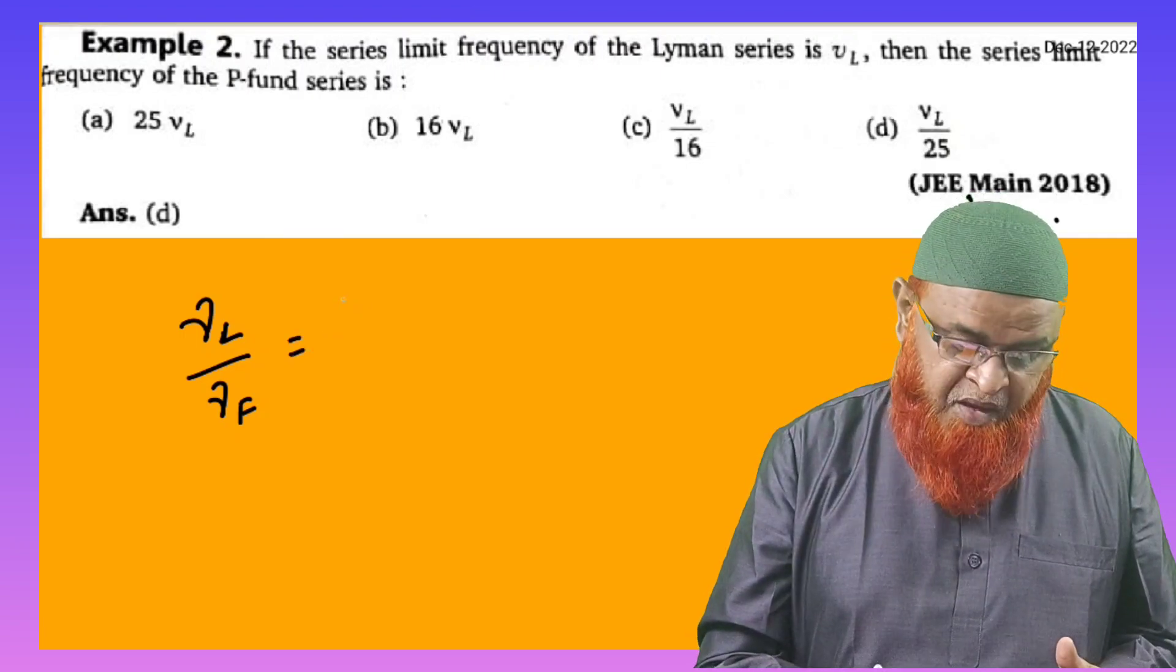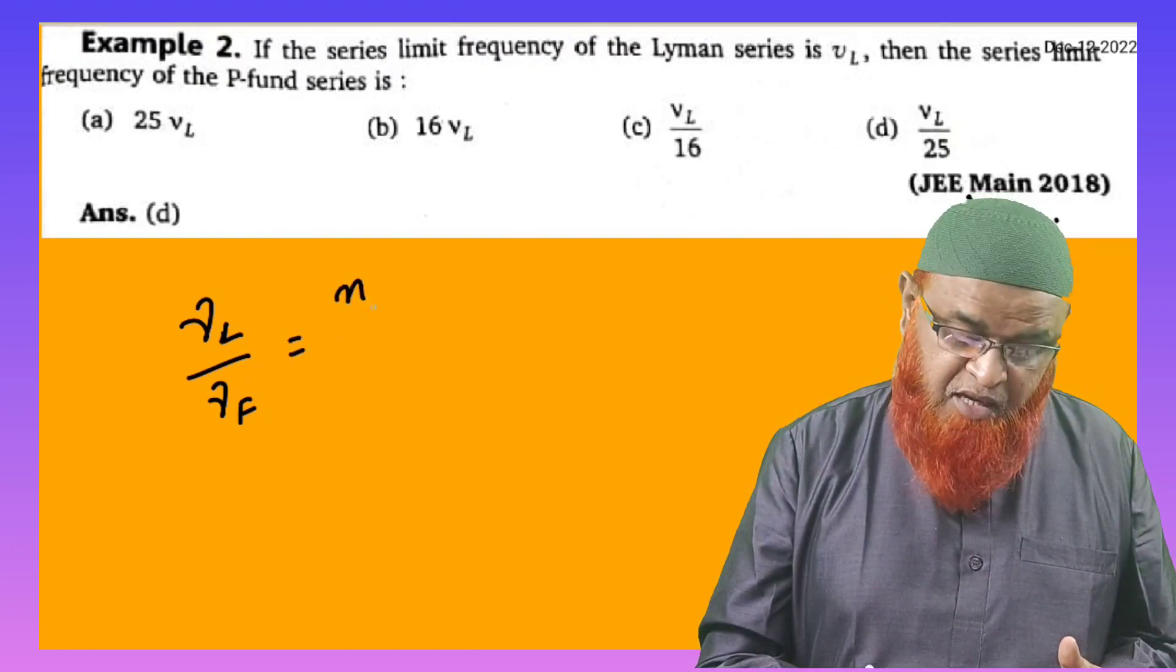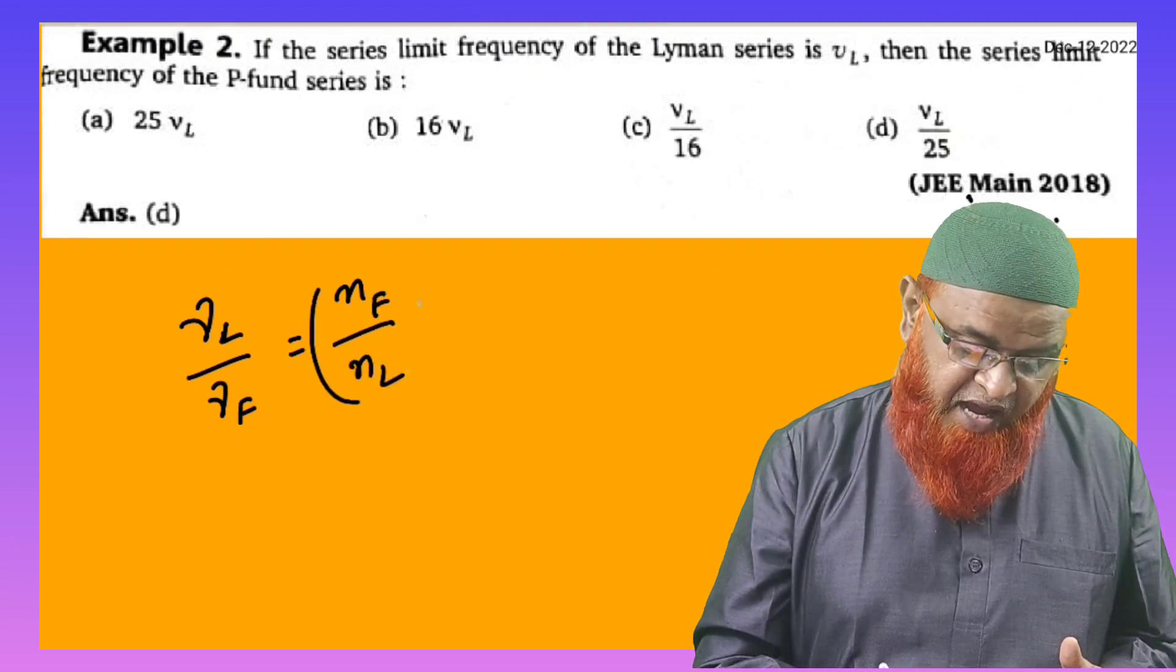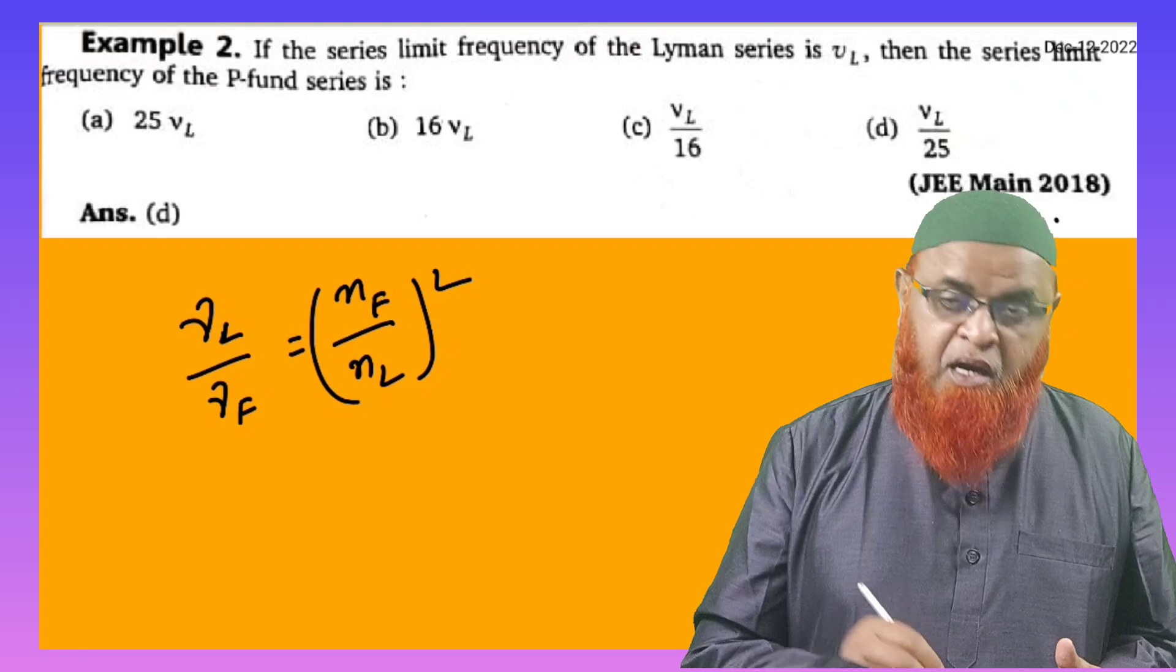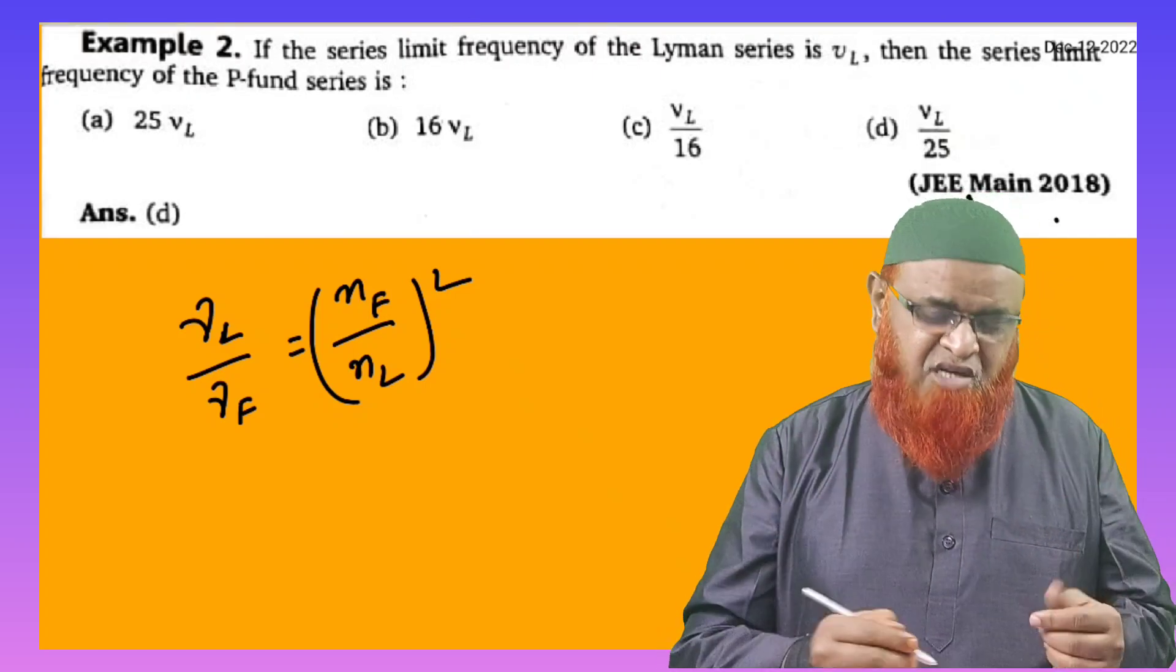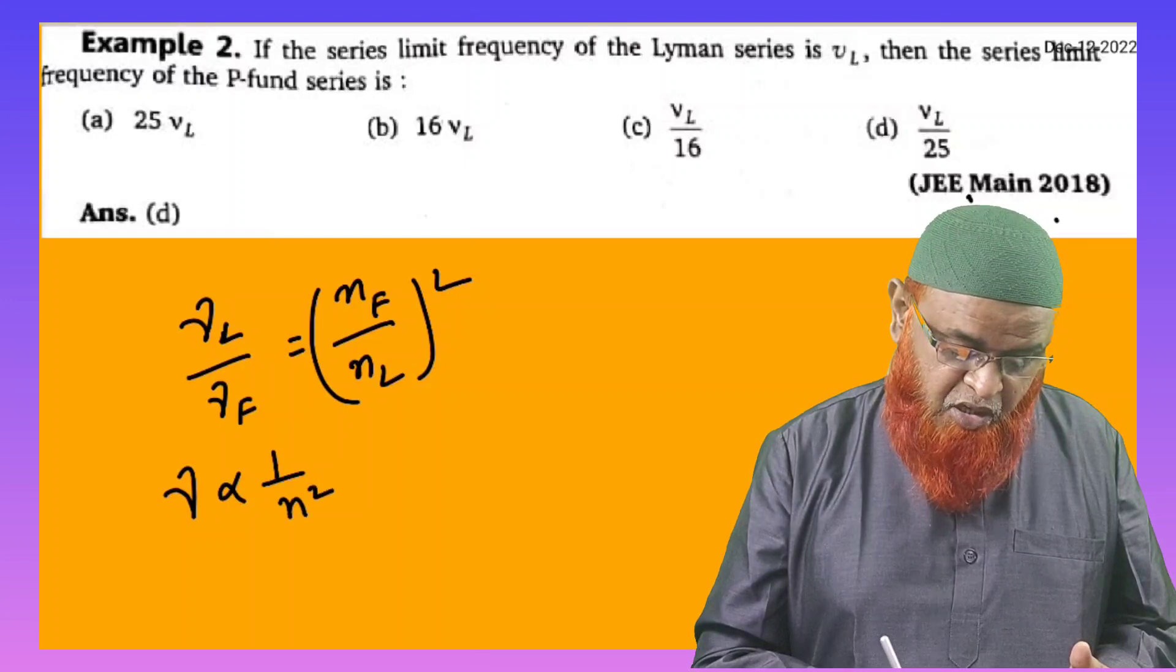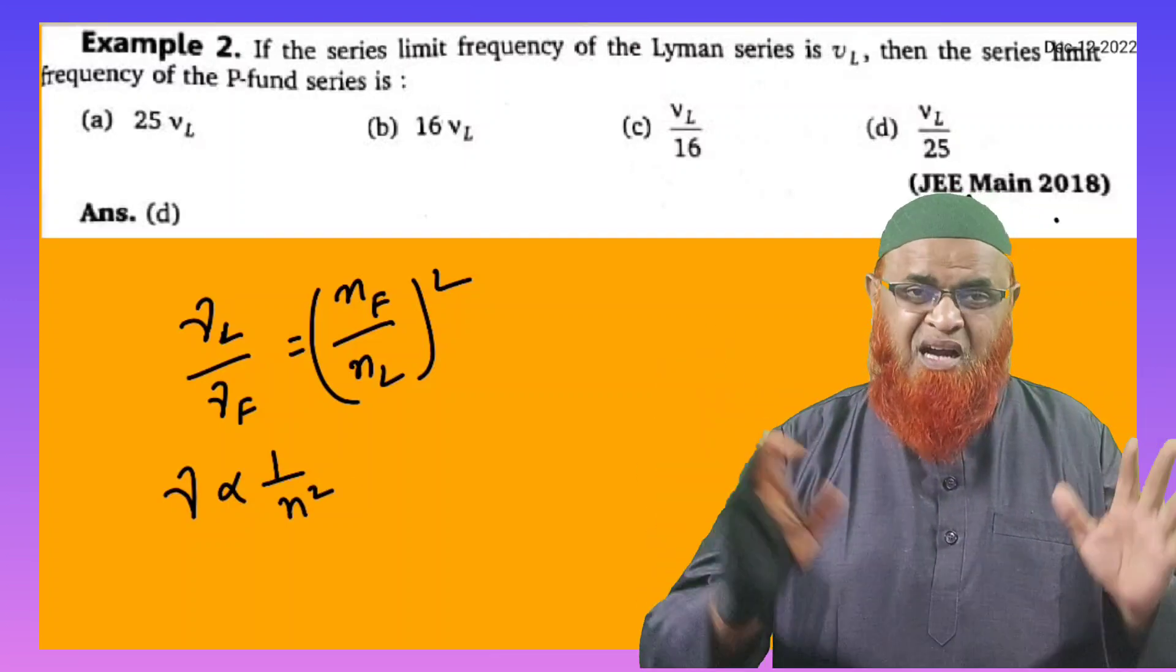This is equal to the principal quantum number of Pfund series divided by principal quantum number of Lyman series, whole square. We can take the relation directly that frequency is inversely proportional to principal quantum number whole square.